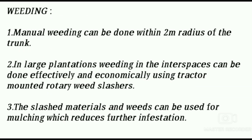Weeding: manual weeding can be done within 2 meters radius of the trunk. In large plantations, weeding in the interspaces can be done effectively and economically using tractor-mounted rotary wheel slashers. The slashed materials and weeds can be used for mulching, which reduces further weed infestation.